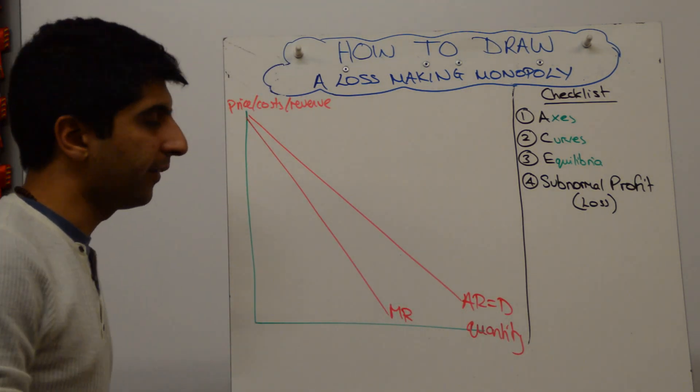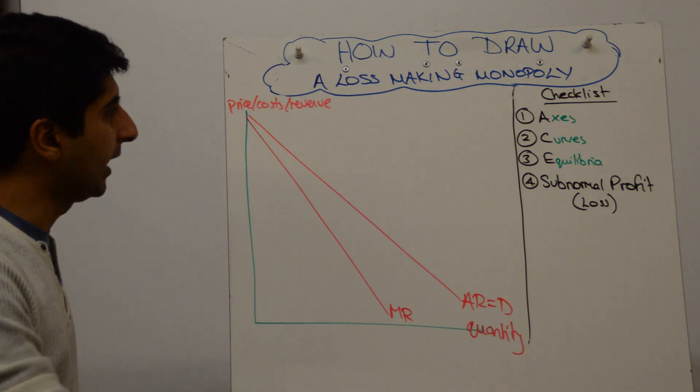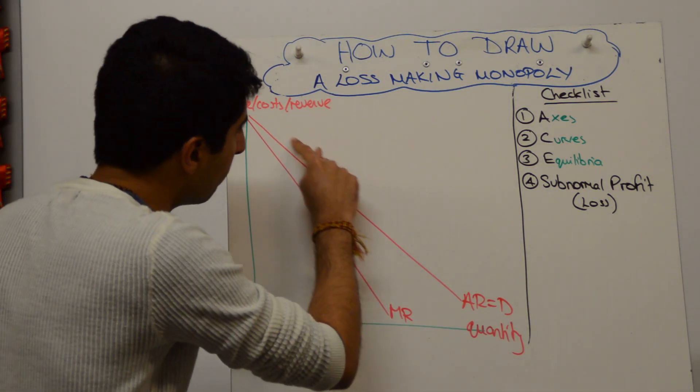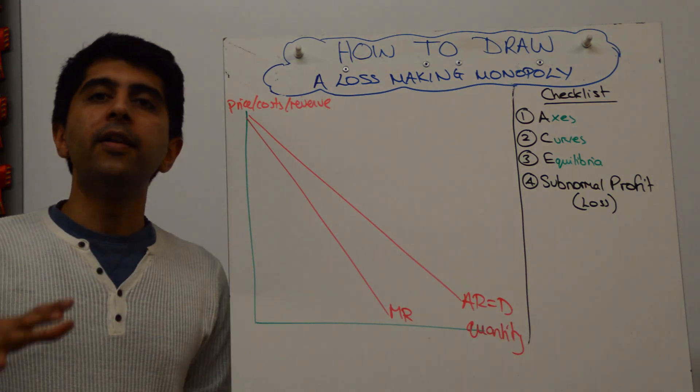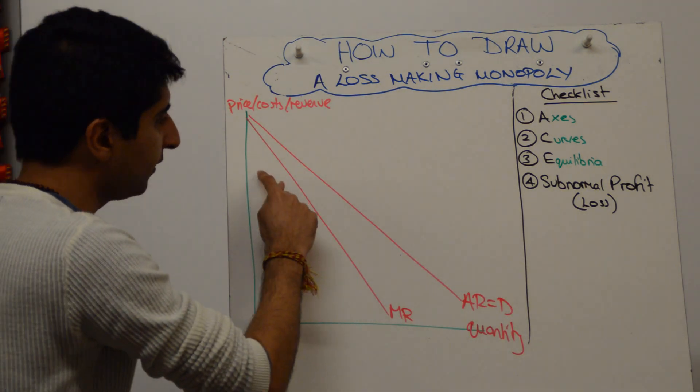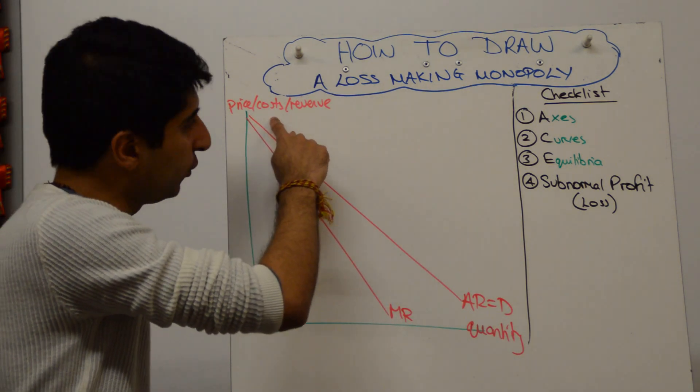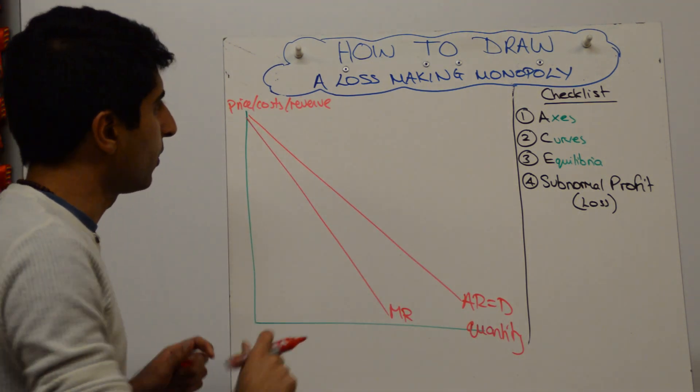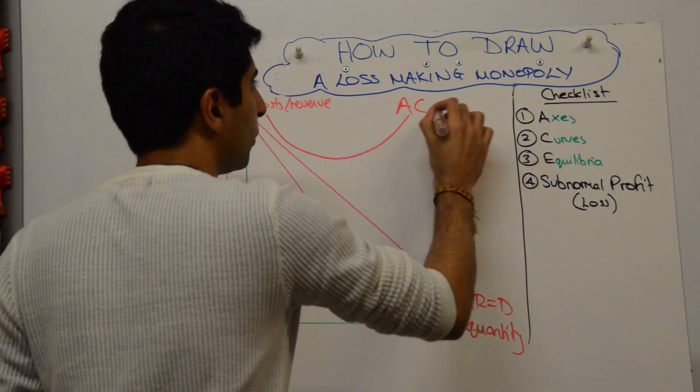Then your average cost. Now this is where you've got to make sure you get the average cost drawn correctly. You've got to draw your AC above your AR, because obviously if AC is more than AR, there is a loss being made by this monopolist. So normally your AC is just drawn randomly in the middle here somewhere. Now if you're drawing a loss, you have to draw it above your average revenue curve. So something like this will do the trick nicely, call that AC, that's fine.